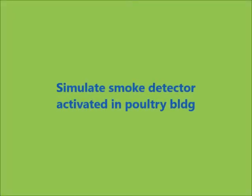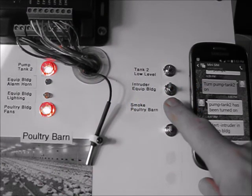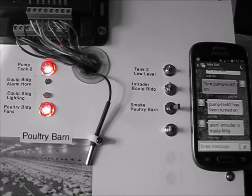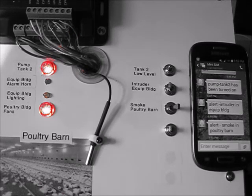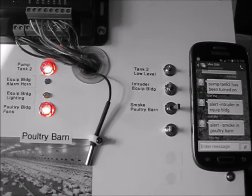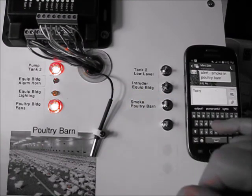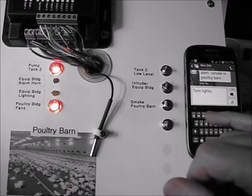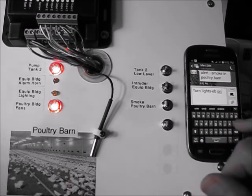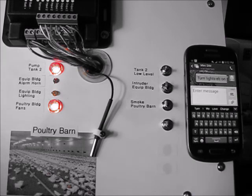Another excellent application for EasySwitch is in conjunction with smoke and fire detectors. Here we simulate a smoke detector turning on. In addition to the message received on the smartphone, this could just as easily have turned on a siren to alert personnel of a potential fire. The last example of control using EasySwitch is to turn the lights on in the equipment building. A light on the demonstration panel indicates the equipment building lighting being turned on.